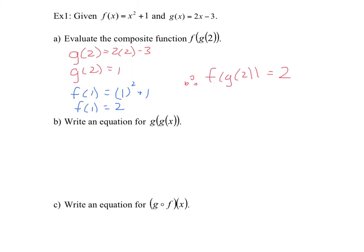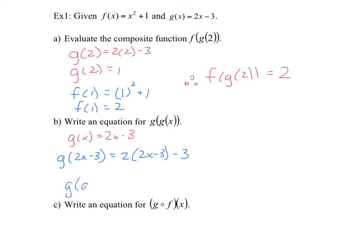Now, write an equation for g of g of x. That's just plugging in g of x into our function g. So g of x is equal to 2x minus 3, and that's what I'm replacing for x. So I've got g of 2x minus 3, and I'm plugging that into my original function g of x. So you have 2 times (2x minus 3) minus 3. I've replaced x with 2x minus 3. Expanding that: 4x minus 6 minus 3, so g of g of x is equal to 4x minus 9, because minus 6 minus 3 is minus 9.